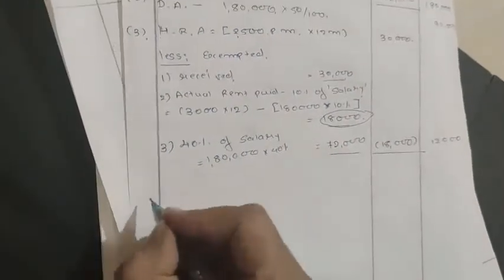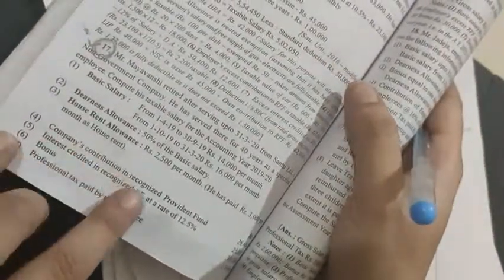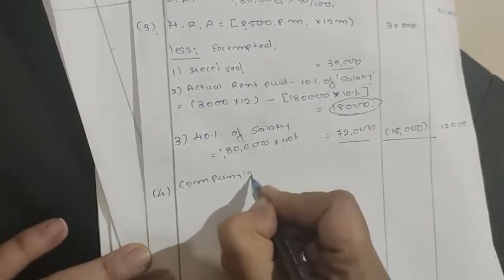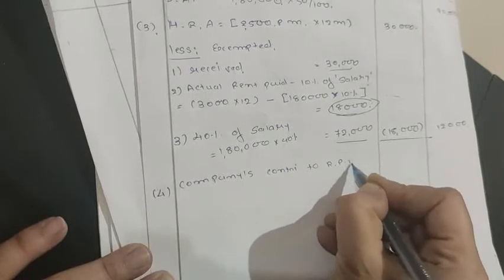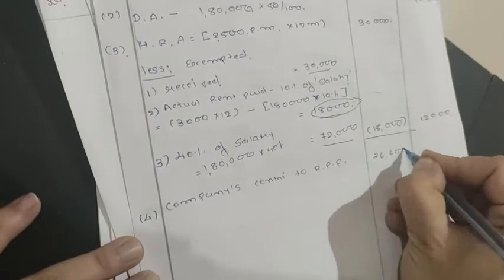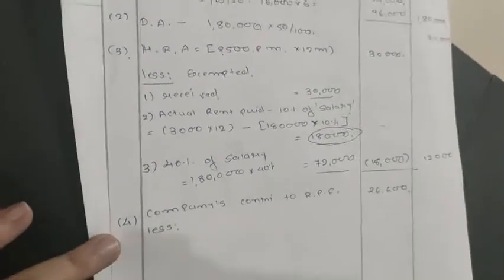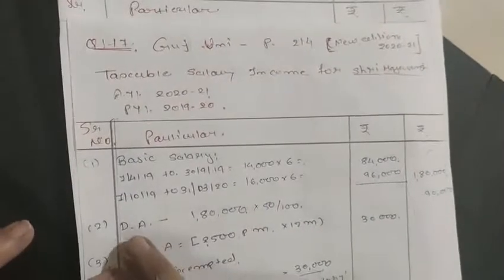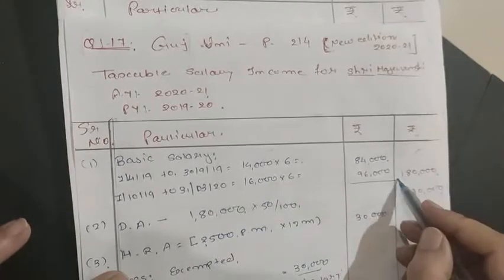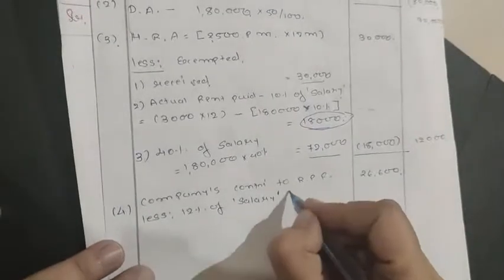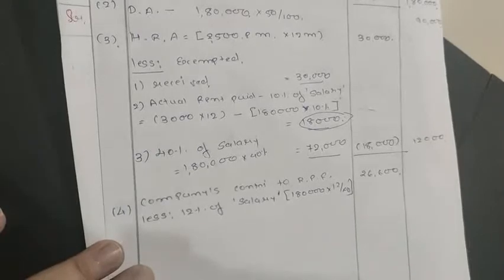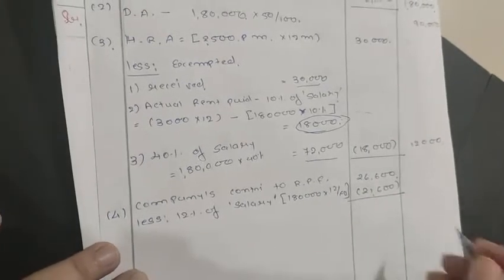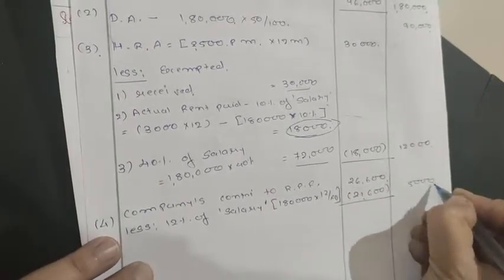Number 4: Company's Contribution to RPF = ₹26,600. Exemption limit: 12% of salary. Here salary = Basic only (DA not in retirement benefit) = ₹1,80,000. 12% of ₹1,80,000 = ₹21,600. Taxable employer RPF contribution = ₹26,600 − ₹21,600 = ₹5,000.